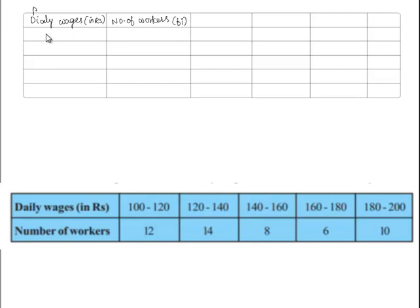Here the limits are 100 to 120, 120 to 140, 140 to 160, 160 to 180 and 180 to 200. And for these the number of workers were 12, 14, 8, 6 and 10.